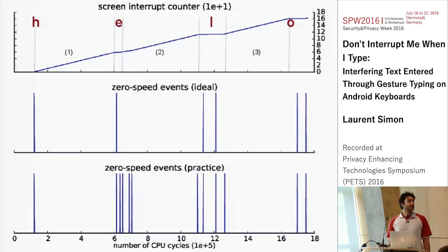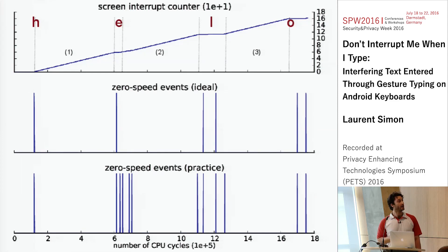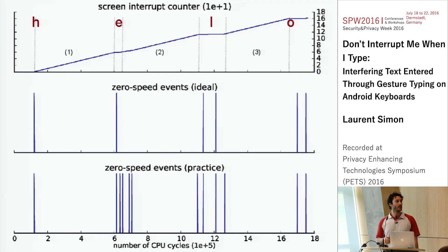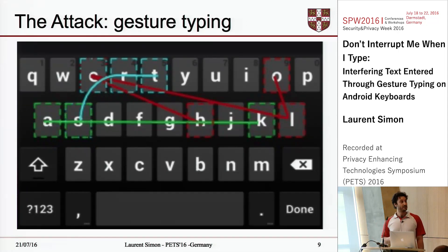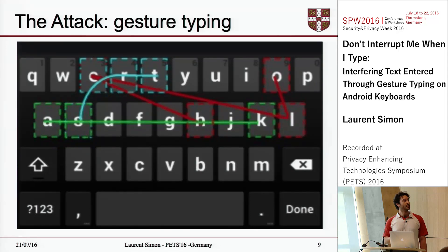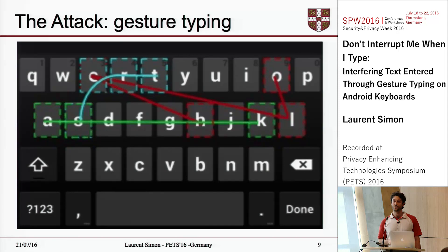We would like to precisely locate where those zero speed events occur, but in practice we only manage to get a noisy distribution of zero speed events. There are two reasons for this. First, users move their finger really fast on the screen, making the signal very noisy. Second, for certain words there simply aren't any zero speed events at all — for example the word 'ask' (A-S-K), where the finger might go straight from A to K without stopping at S. More generally, users tend to move their finger along curved trajectories rather than ideal straight lines, making the signal even noisier.